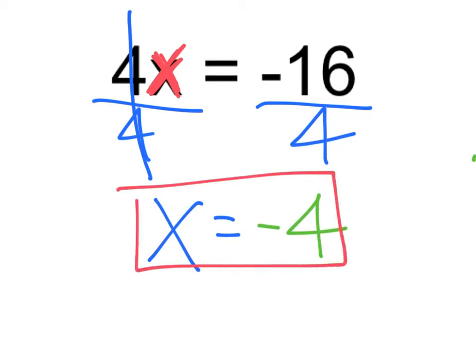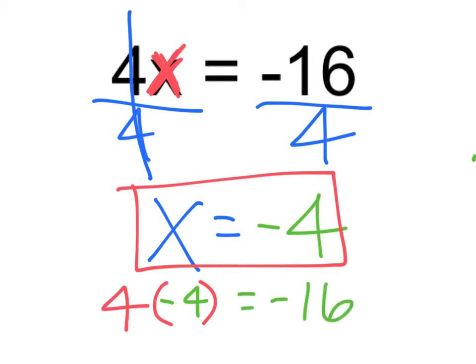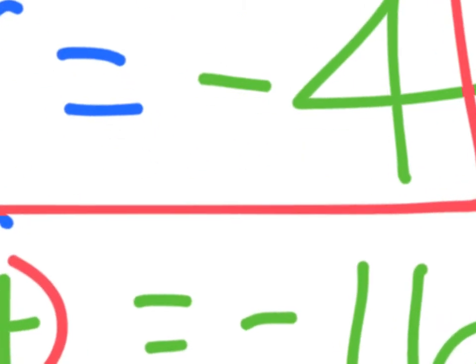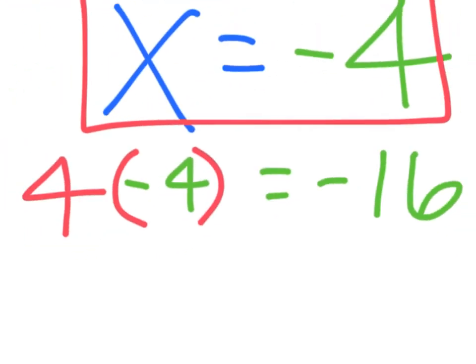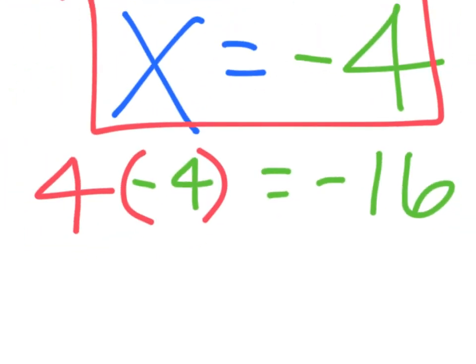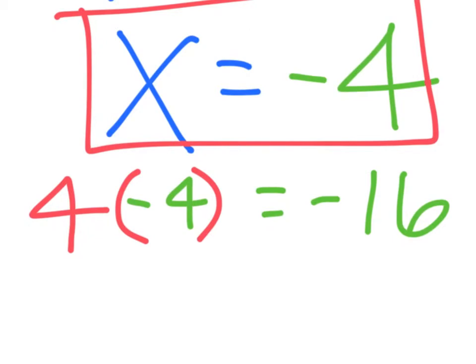This is our answer. If we substitute in negative 4 for x — 4 times negative 4 equals negative 16 — that checks out. We've checked the solution. Wonderful.